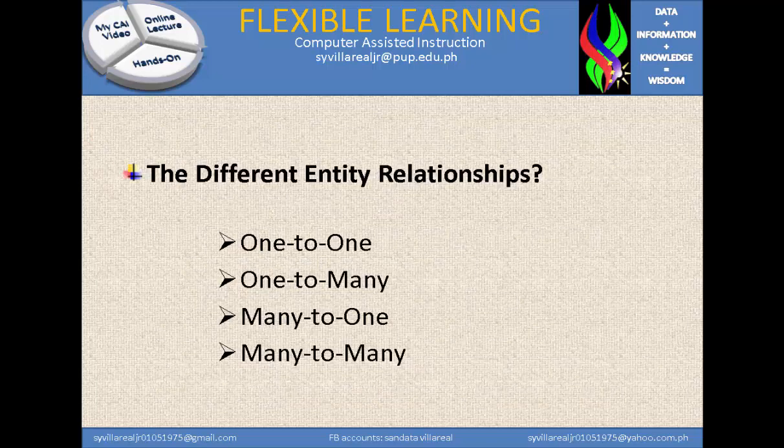Next topic, we have the different entity relationships. We have four: one to one, one to many, many to one, and many to many. Relationships in the database can be identified through its tables and what fields are inside each table.